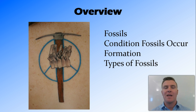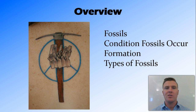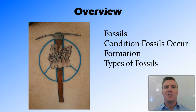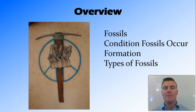In this video we've looked at fossils being any evidence of past life. We've looked at the conditions fossils occur in — being that they need to be buried quickly before they decompose. The formation of fossils as sediments pile on top and water brings minerals in to replace those in the bone, causing mineralization, and then erosion or excavation bringing fossils to the surface. And we've talked about the different types of fossils: actual remains, mold, cast, carbonized fossils, and trace fossils. Thanks for watching guys, peace out.